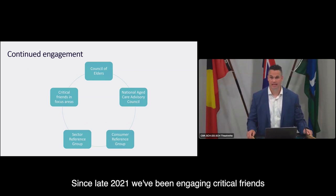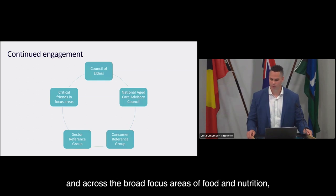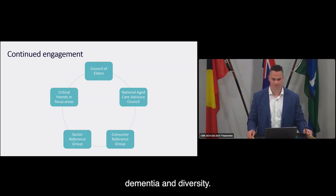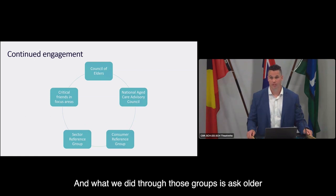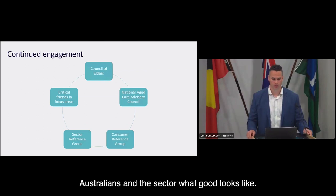Since late 2021, we've been engaging critical friends across the four focus areas of food, nutrition, dementia and diversity. Through those groups, we asked older Australians and the sector what good care looks like.